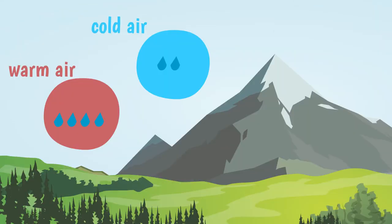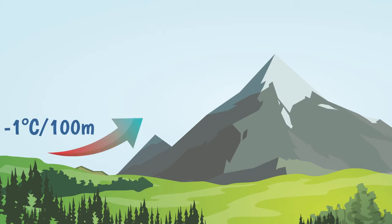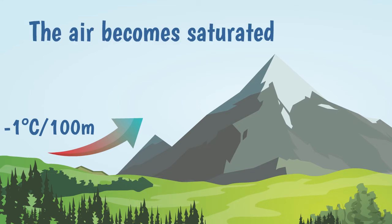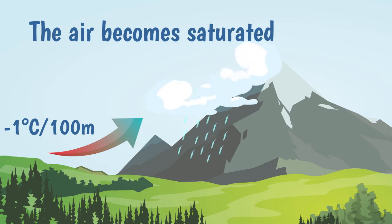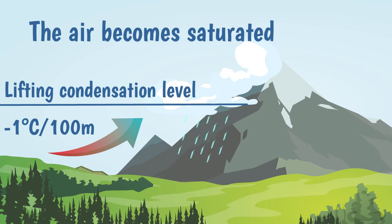But that is not all. Cold air can contain less water vapor than warm air. So as the air cools below a certain temperature, it cannot retain all the water it initially had when it started rising. We say it becomes saturated, and droplets start to form. This leads first to clouds and eventually to rain.